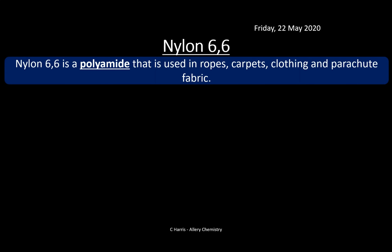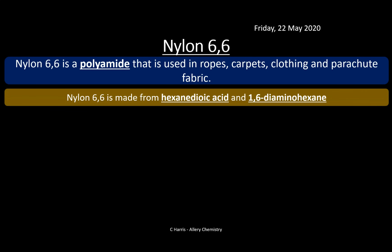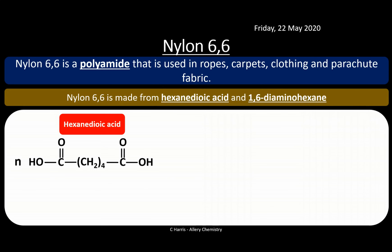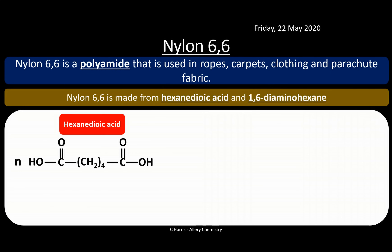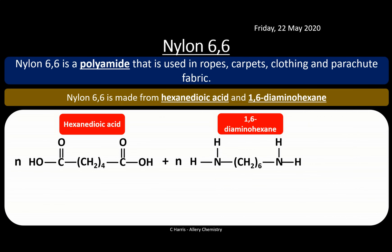Another example is nylon 6-6, another polyamide you need to know, used in ropes, carpets, clothing, and parachute fabric — a really strong, robust, durable material. The 6-6 comes from hexanedioic acid (hex = 6 carbons) and 1,6-diaminohexane (also 6 carbons). Both monomer units contain six carbons each. When joined together, we eliminate water and form nylon 6-6. The number refers to the carbon count in each monomer. The only variety you need to know for this exam is 6-6.